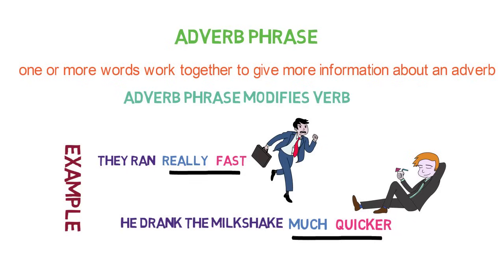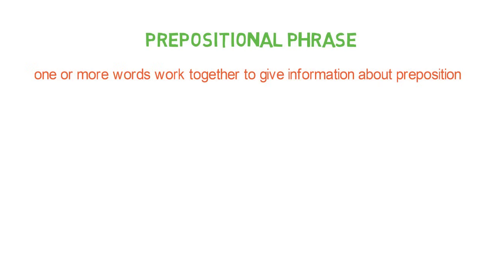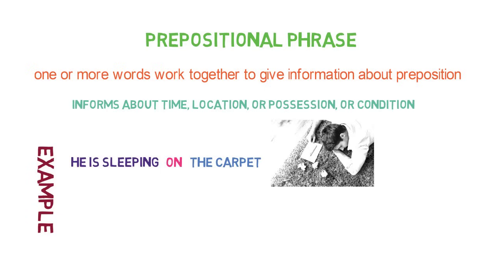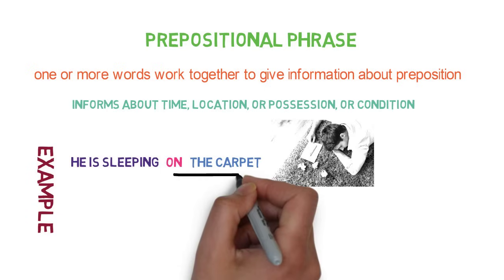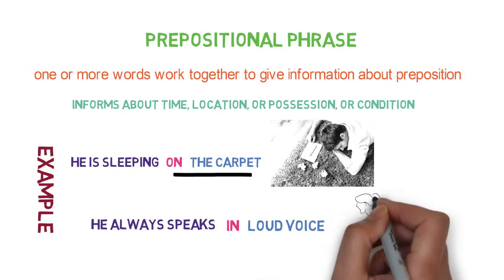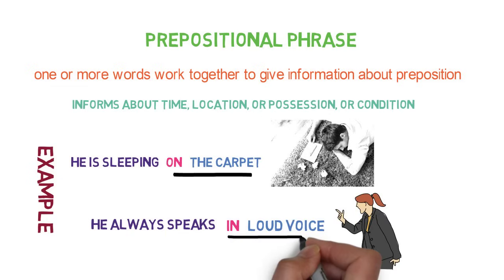Let's look into the next type of phrase: prepositional phrase. In the prepositional phrase, one or more words work together to give information about prepositions — they give information about time, location, position, or condition. For example, 'he is sleeping on the carpet' — here 'on' is the preposition and 'on the carpet' is the whole prepositional phrase. Another example: 'always speaks in a loud voice' — 'in a loud voice' is the whole prepositional phrase. That's all about prepositional phrase.